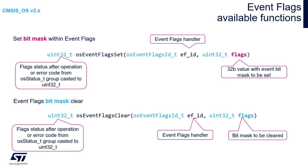To clear a mask, use osEventFlagsClear, which requires two arguments: the event flag object handler and the bit mask to be cleared. Do not use the highest 8 bits. Both set and clear functions return a 32-bit signed value containing the event flags content after the operation, or an error code if an error occurred. Possible error codes include osErrorParameter when the bit mask uses reserved bits, and osErrorResource when the resource is not available. Both error codes have negative values originating from osStatus_t and are cast to unsigned 32-bit.